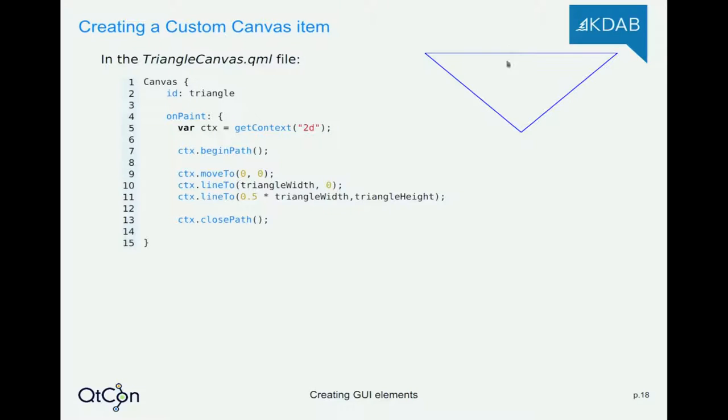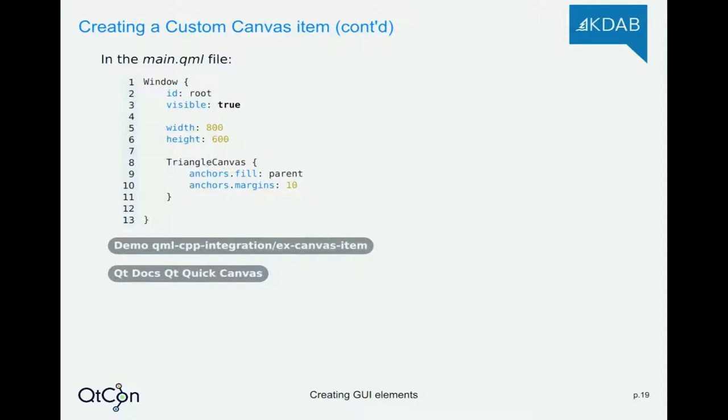In this talk, I wanted to go through the idea of starting with a simple QML custom item written in QML, notice it will be slow, and then iterate so I can get to the more faster version later on. First of all, I'm going to show you how to implement a custom component using the canvas item in QML to just draw a simple triangle.